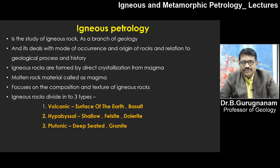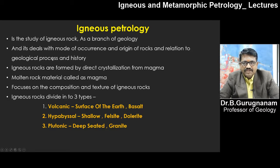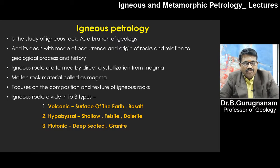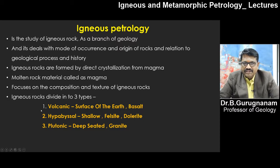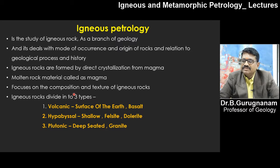The study of igneous rocks formed from magma is a branch of geology. It deals with the mode of occurrence, origin, and its relation to geological processes. Igneous rocks are formed by direct crystallization of magma — a hot molten liquid material. Composition and texture of igneous rocks are part of the study of igneous rocks.